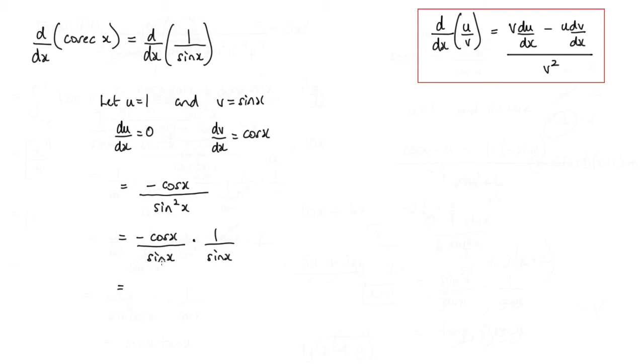Negative cos x over sin x, we can actually write as negative cot x. And 1 over sin x, well we know that that is cosec x.